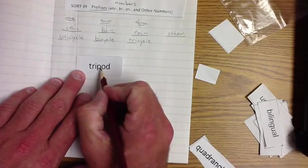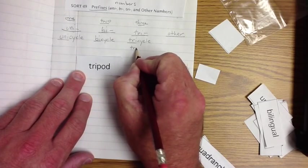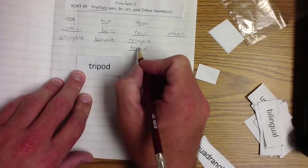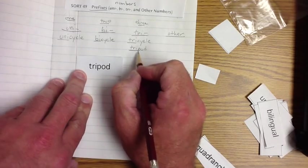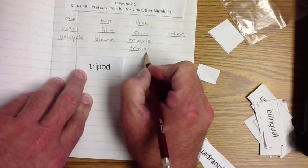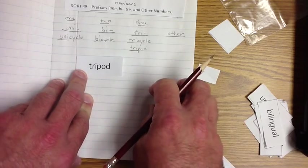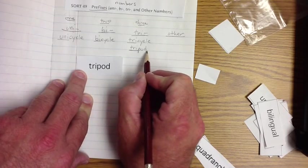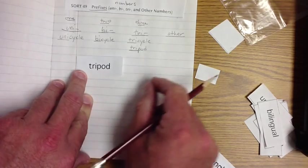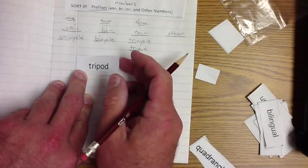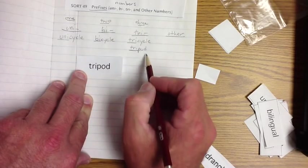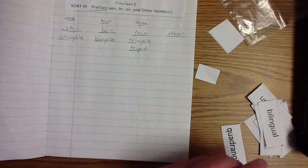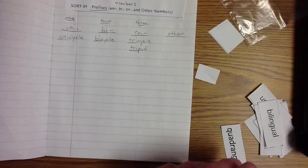We're going to do tripod. Tripod, underline the tri. As I look at tripod, pod is, you know, something stationary. Tripod means that there's three pods, three legs on a tripod, three pods. Cool.